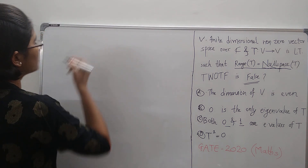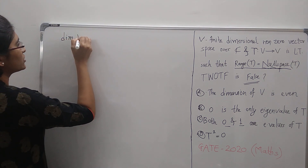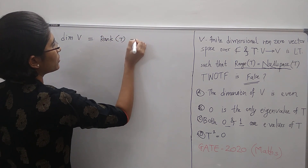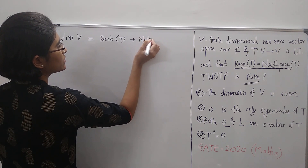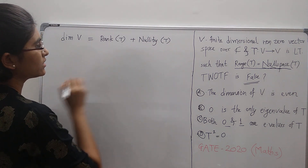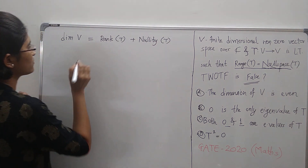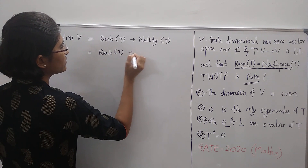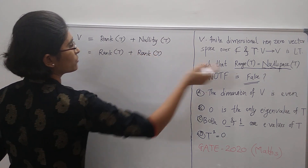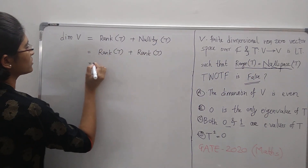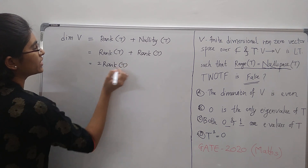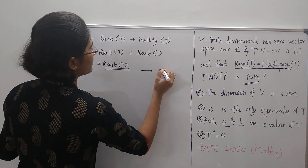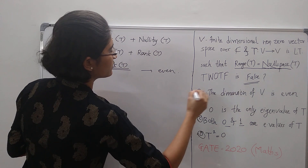By the rank-nullity theorem, we have dimension of V equals rank of T plus nullity of T. Now we have given that range of T equals null space of T. So rank of T equals rank of T plus rank of T, because from this, nullity of T equals rank of T. So dimension of V equals 2 times rank of T. Since rank of T is some positive integer, dimension of V is even. This is true.